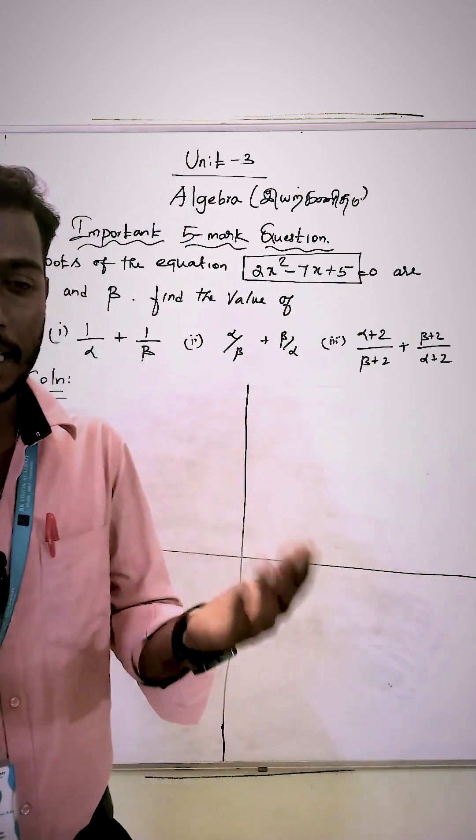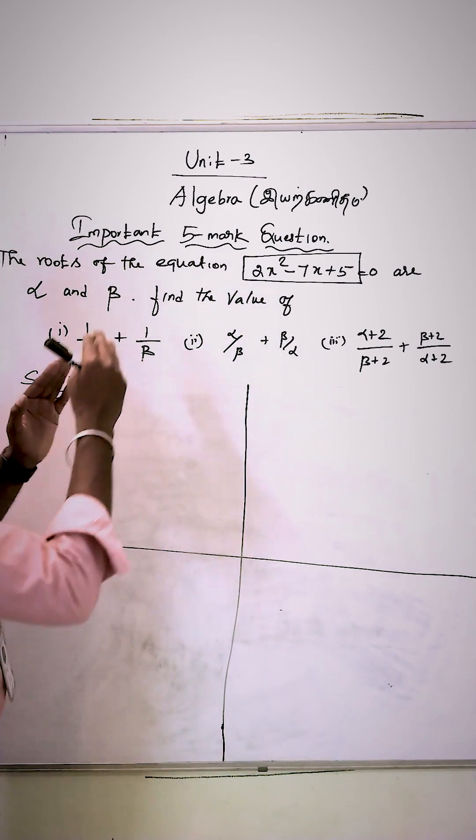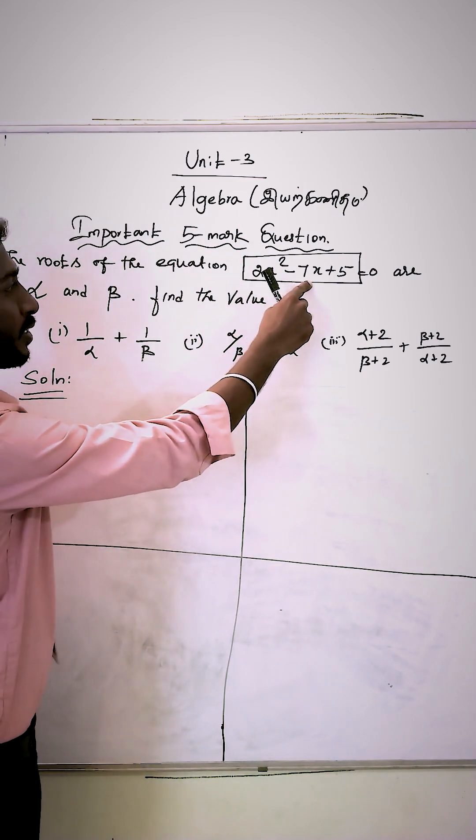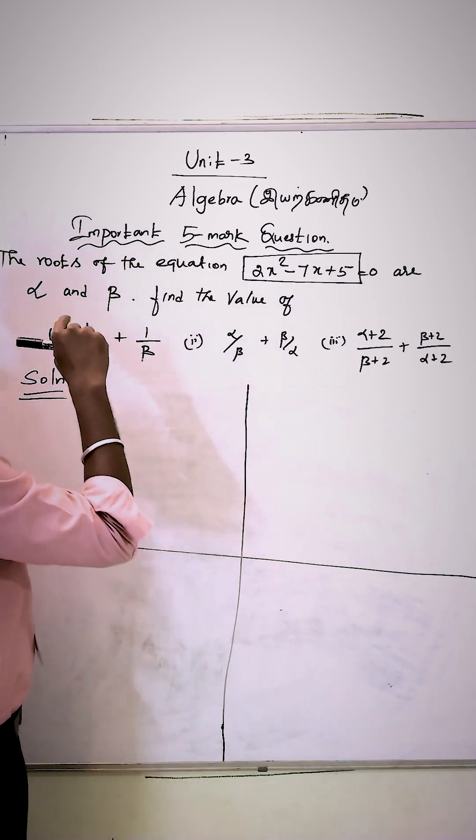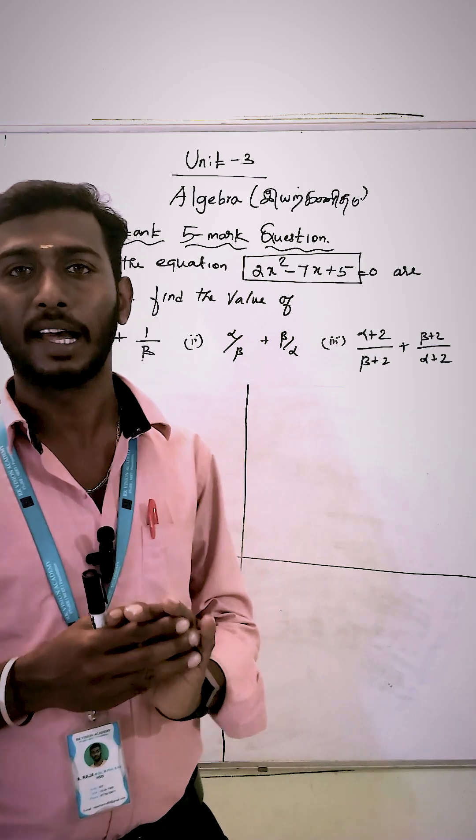In the last class, we talked about alpha and beta. That is algebra. The roots of the equation 2x² minus 7x plus 5 equals 0 are alpha and beta. Find the value of these. This is a very important question in the alpha and beta concept.